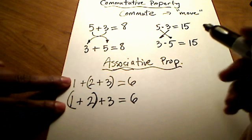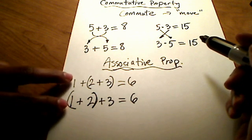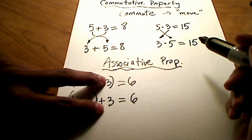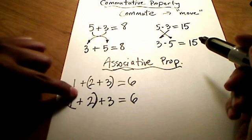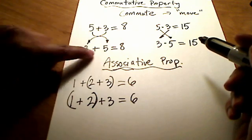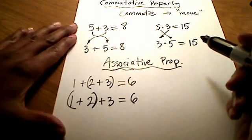Do you notice that the order of the numbers didn't change? Look, they both start with one, two, three. So when the order doesn't change, but what's inside the parentheses changes, that's the associative property. When the order changes, that's the commutative property. Big difference.